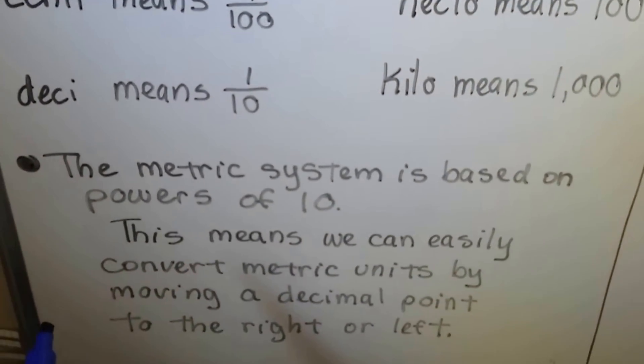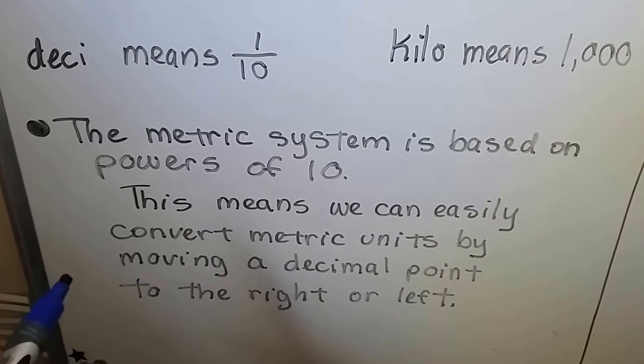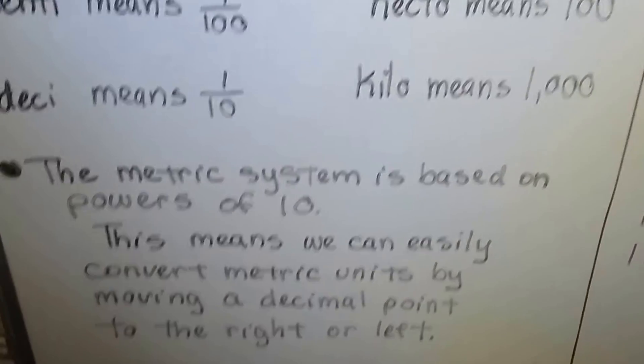The metric system is based on the powers of ten. This means that we can easily convert metric units by moving a decimal point to the left or the right. It's that simple.